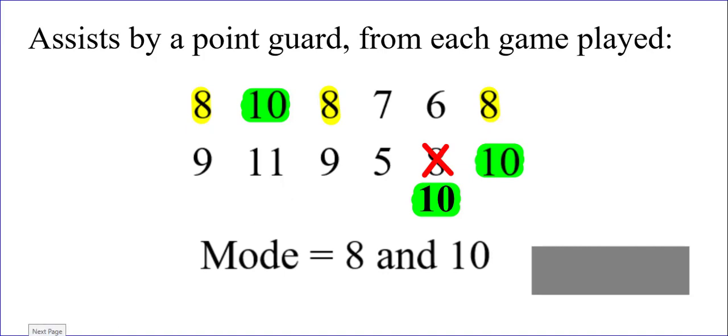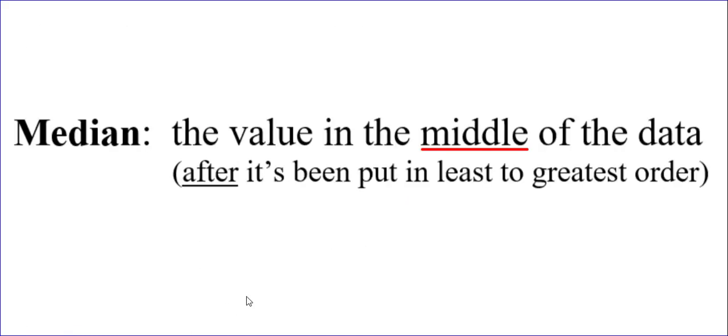And I should say before moving on, if there were no numbers that repeated at all, then there would be no mode. All right, what about the median? This is the value that's in the middle of the data, but it's only in the middle after the data has been put in least to greatest order. So don't bother finding the middle number when it's in a scrambled random order. You have to put it in least to greatest order first.